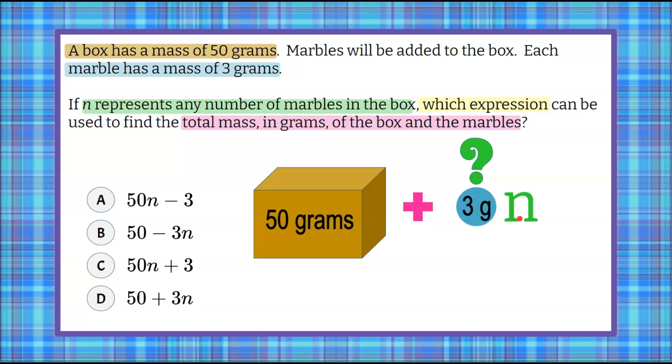So for example, if I know there's 3 marbles in the box, 3 times 3 tells me that 3 marbles weighs 9 grams. So we're going to leave n as our variable, and we're going to rewrite this picture into an algebraic expression.